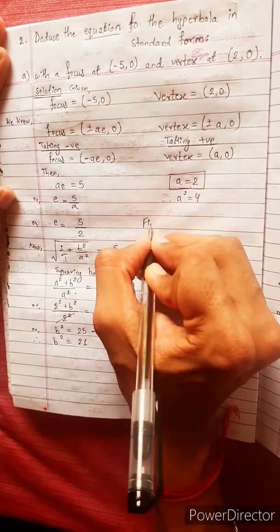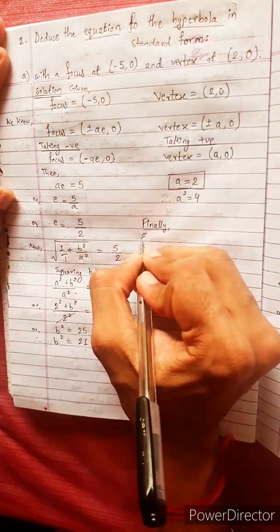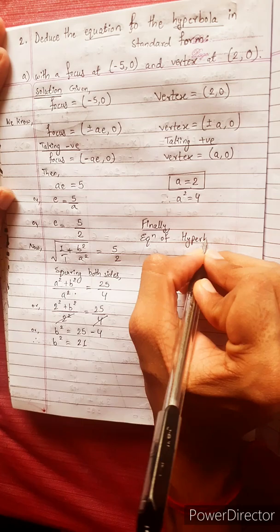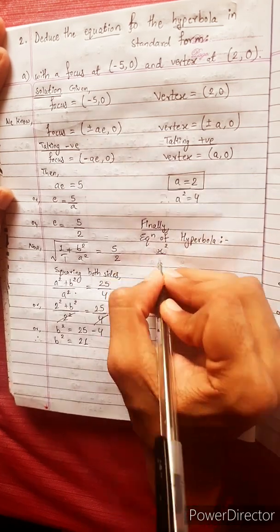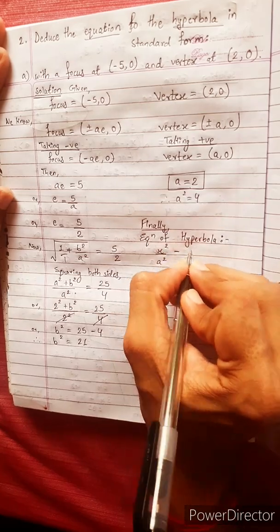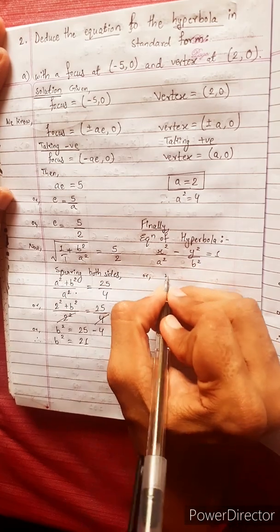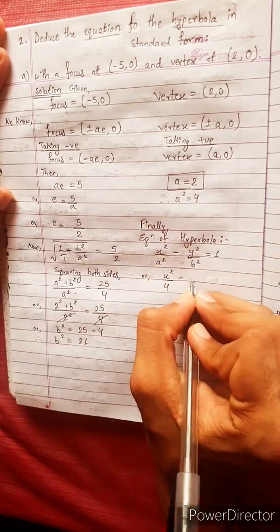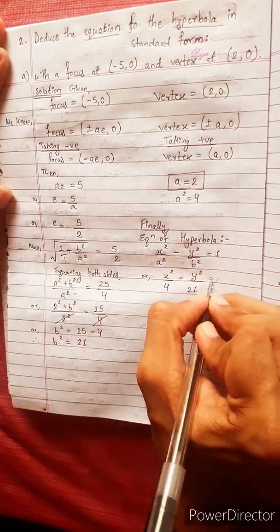Finally, equation of hyperbola is given by x square divided by a square minus y square by b square equals to 1. Or x square divided by 4 minus y square divided by 21 equals to 1.